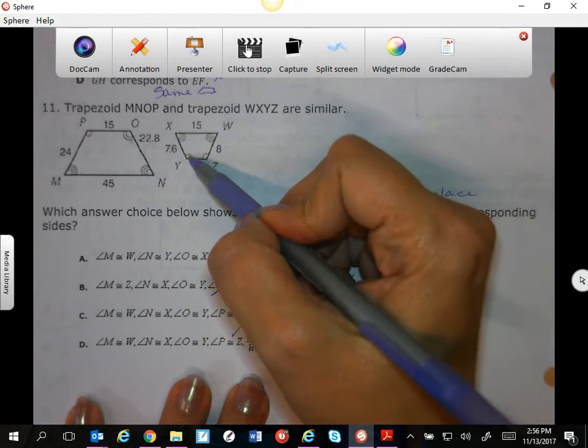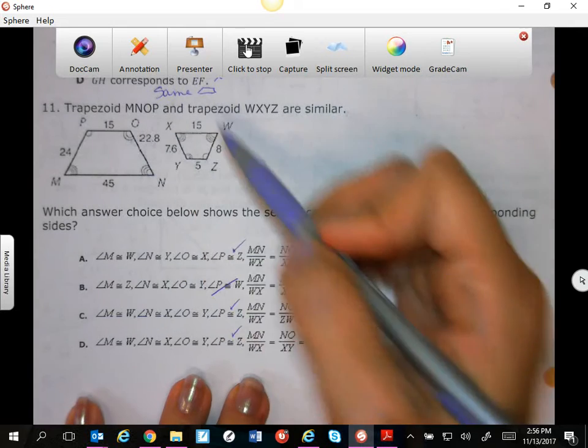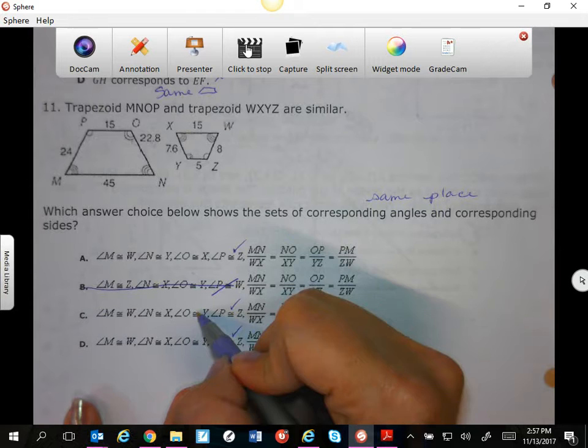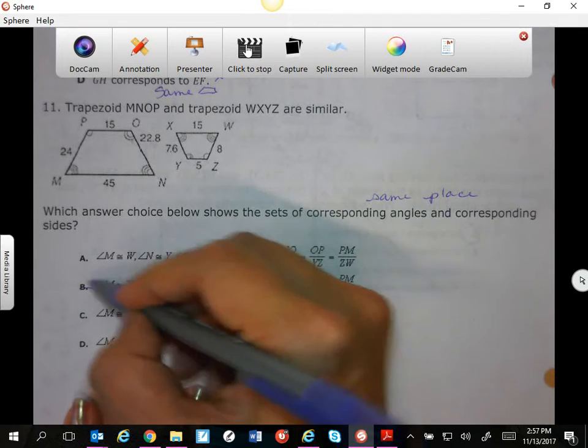I have angle Y, which has 2, and angle O. So we're not worried about this one anymore. Angle Y and angle O—so this one's out.